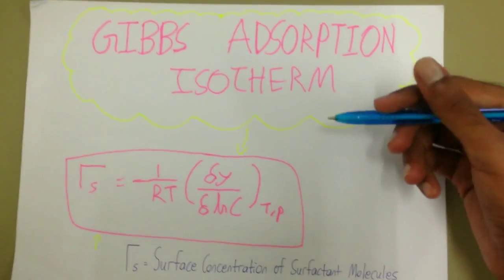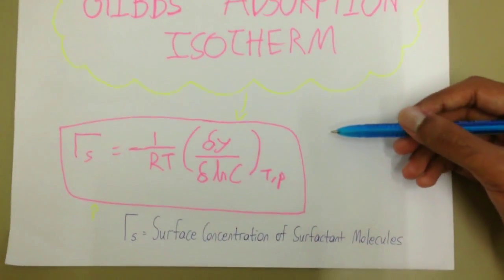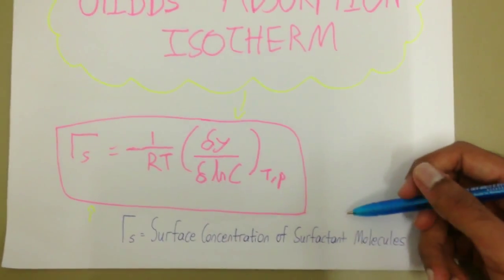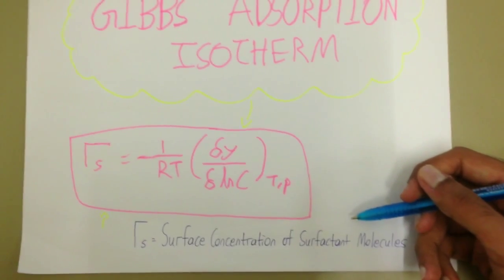This is the Gibbs adsorption isotherm equation that is used to calculate the surface concentration of surfactant molecules.